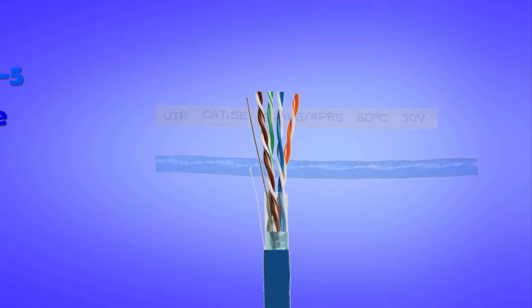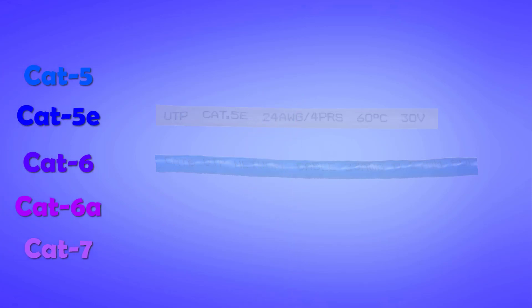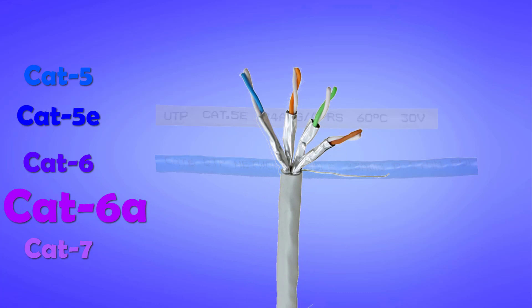Now back to cable categories. After Cat6, the next generation is Cat6a where A stands for Augmented. We can already guess that it must be better and would sport higher speed than a typical Cat6 cable. A Cat6a sports up to 500 MHz bandwidth, which means this cable can transfer 500 Mbps across a length of 100 meters.